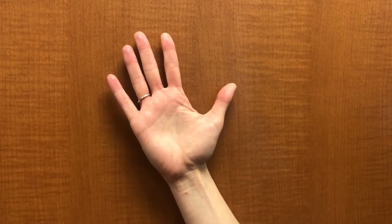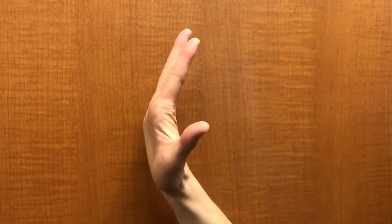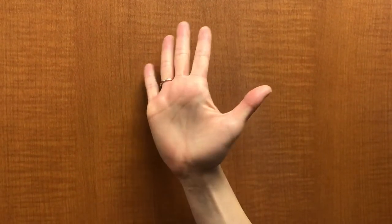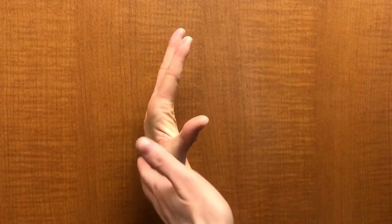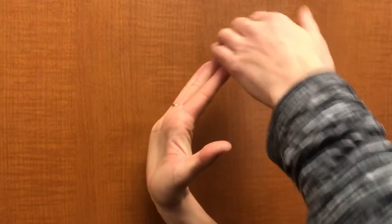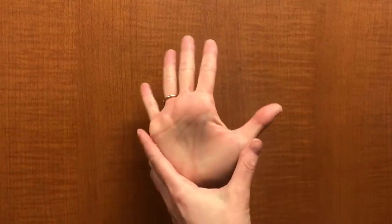This next exercise is called tendon glides. Your goal is to, number one, straighten the hand all the way back. You want to try to get some backwards motion, splaying the fingers all the way open.